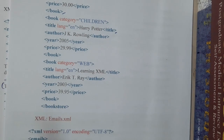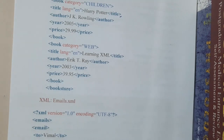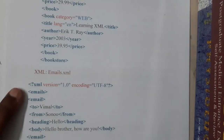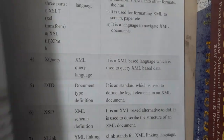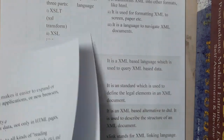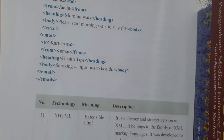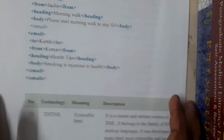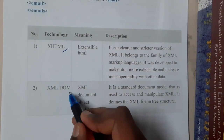If someone gives you this program and asks what it represents, you just observe: bookstore, book, title — it's about some books. That is the reason why XML is really popular and easy to understand. Similarly, the mail example has 'to', 'from', 'heading', 'body' — representing email messages. That's how we will be working with XML.